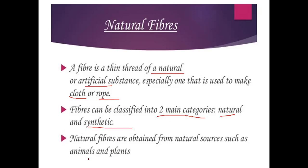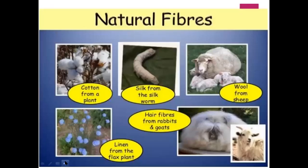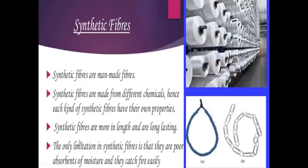Natural fibers are obtained from natural resources like animals and plants — cotton from a plant, silk from a silkworm, wool from a sheep, hair fibers from rabbits and goats, and linen from the flax plant. All these are natural fibers.